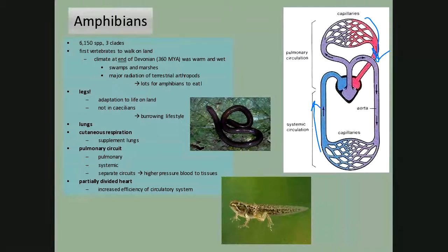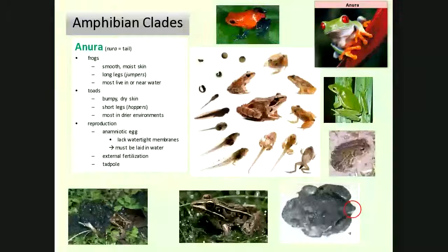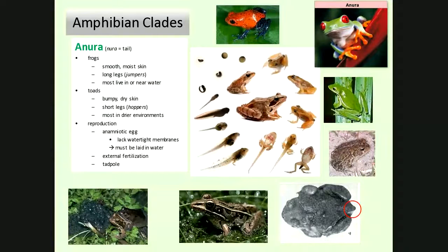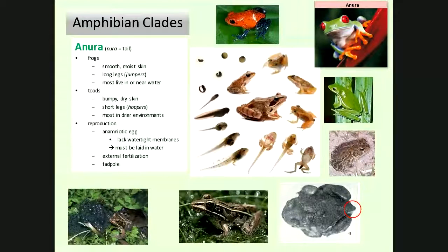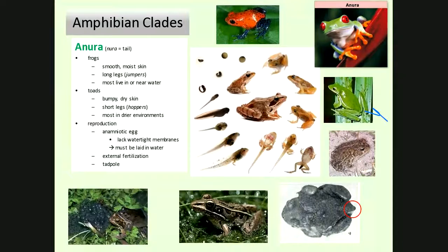Let's look at the different groups of amphibians. The frogs — Anura — the word means 'no tail,' and frogs don't have tails except when they're tadpoles. The middle picture shows the progression of an anuran from egg through tadpole with a tail to adult. There are a few frogs that as adults do retain a tail — there's one in the lower right — just to show there are always exceptions.